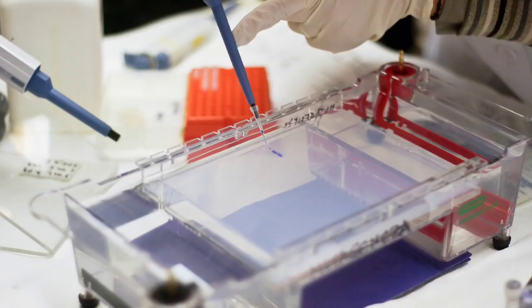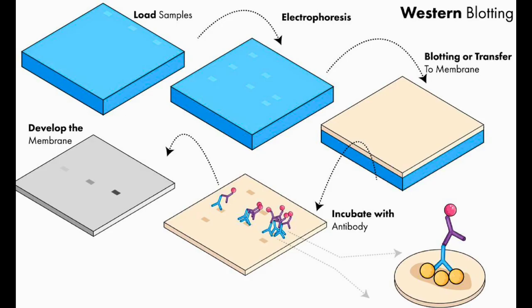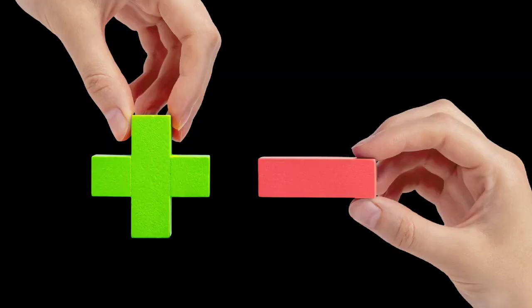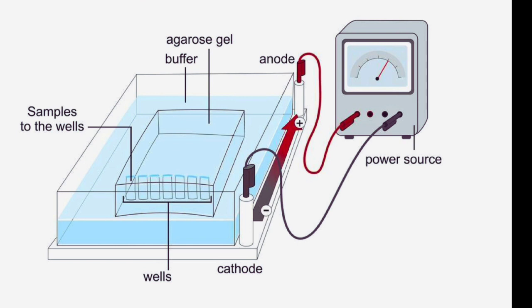4. Running. Upon activation of the power source, an electric current is produced, and the charged particles in the sample move through the gel matrix in the direction of the opposing electrode. Larger, positively charged particles move more slowly, whereas smaller, more negatively charged ones move faster.